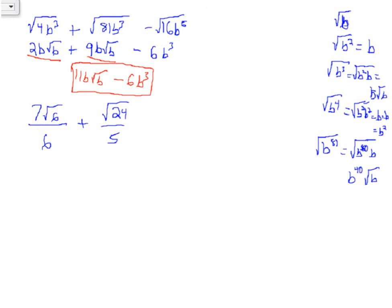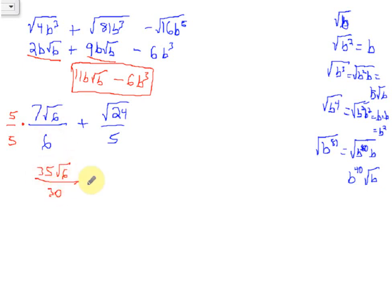The last example has a couple of things going on: we have to simplify our roots to combine like terms, but we also have to get a common denominator to add fractions. I'm going to deal with the denominator first. The common denominator between 6 and 5 is 30. That means I multiply the first fraction's numerator and denominator by 5: 5 times 7 is 35, giving us 35 root 6 over 30. For the second fraction, I multiply both numerator and denominator by 6, giving us 6 square root of 24 over 30. Now I've got a common denominator.